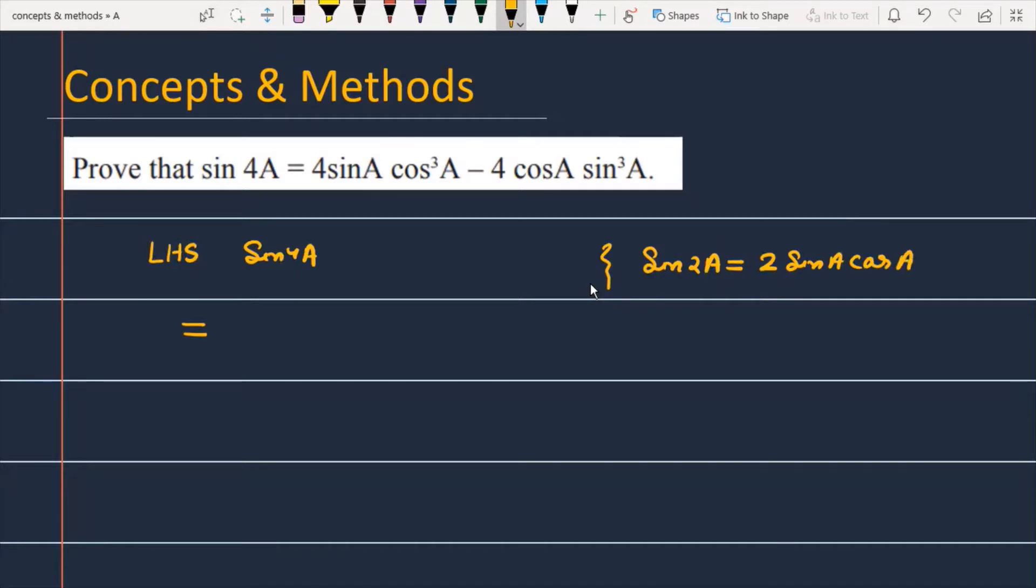So given sin 4A, I can break this as sin of 2 into 2A. If I apply this identity, then the next term will be 2 times sin 2A into cos 2A.